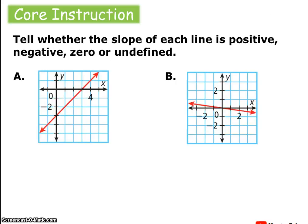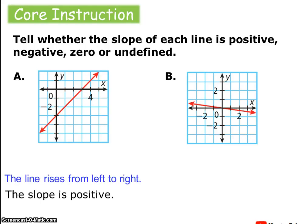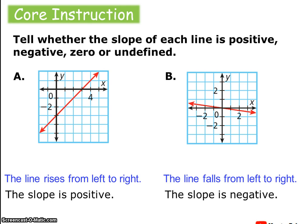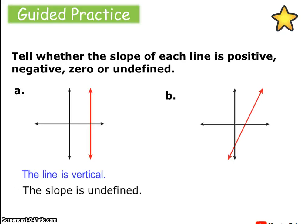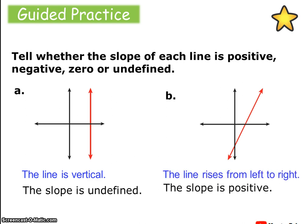Tell whether the slope of each line is positive, negative, undefined, or zero. The first one is going up from left to right — that's going uphill, so it has a positive slope. The one on the right is going downhill from left to right, so that's a negative slope. Hopefully you recognized that a vertical line has an undefined slope and that a line going uphill left to right has a positive slope.